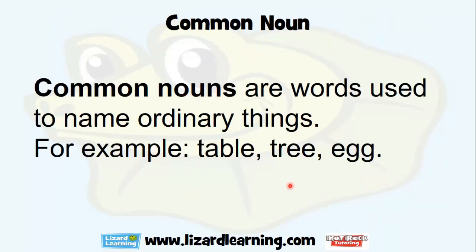Nouns have different forms. Common nouns are words used to name ordinary things. For example: table, tree, egg, animals, pig, lake, river, building, car, truck, etc. Those are common nouns.